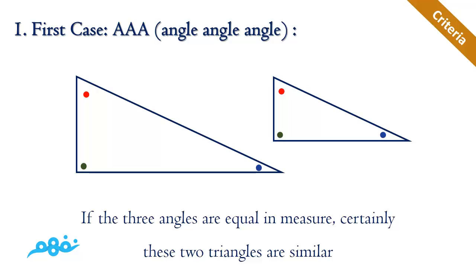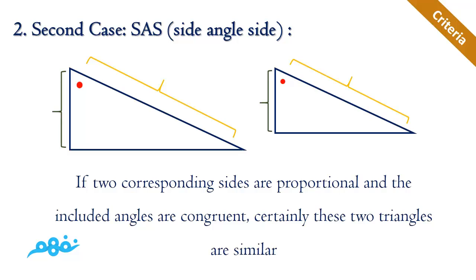The second criterion is SAS, or side-angle-side. If you have two different triangles with the same measurement of an angle—for example, here is the red angle—and the two corresponding sides are proportional, but it must be the two terminals of the angle. Here the small green over the large green equals the small yellow over the large yellow, so they are proportional and the included angle allows us to apply SAS. The two triangles are certainly similar.